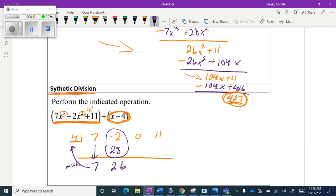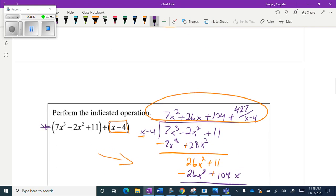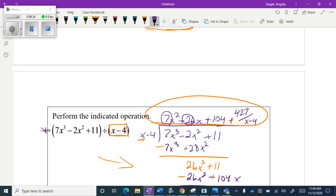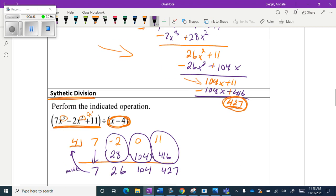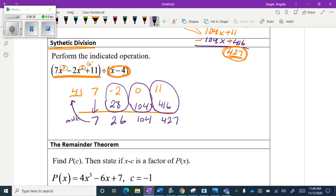And then the same thing. So 26 times 4 is 104. Add them together. Now multiply again. 104 times 4 is 416. Add them together. So these numbers should start looking familiar up here. 7, 26, 104, 427. 7, 26, 104, 427.